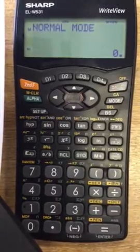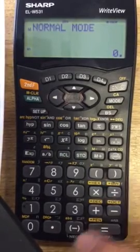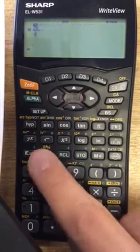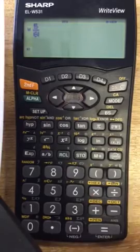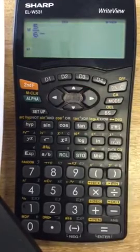First of all, if you want to type in a fraction, for example 5/6, you just press 5, AB, 6. If you want to then come out of that fraction, just press the right button.